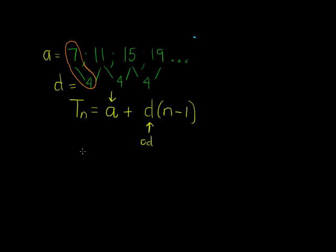This general term for this sequence would be T_n is equal to 7 plus 4 times (n minus 1), and I can simplify it if I want to, and I get 4n when I distribute it. 7 minus 4 gives me plus 3. And there we go.